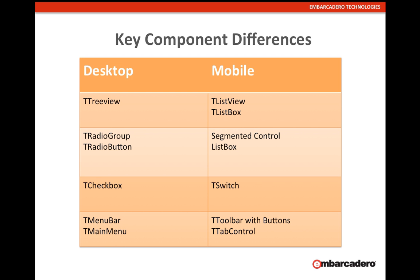There's no use of a radio button or radio group in iOS applications. Instead you would either use a T-ListBox or create a segmented control. iOS applications also traditionally don't use checkboxes — where you'd have a checkbox in your desktop app, you'd use a T-Switch control on mobile. For navigation and menus, there's no traditional file menu, so instead of a T-MenuBar or T-MainMenu, you would use a toolbar with buttons or a tab control.